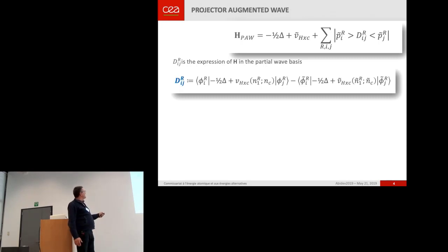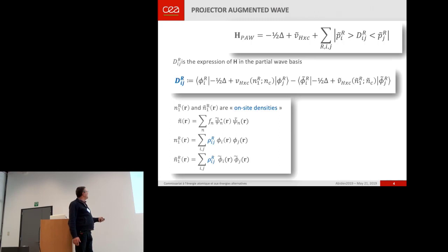And the Hamiltonian look like this. This non-local operator is now self-consistent, and it is not an equality. This term is, in some way to view that, it's an expression of the Hamiltonian in the localized basis, in the PAW basis.